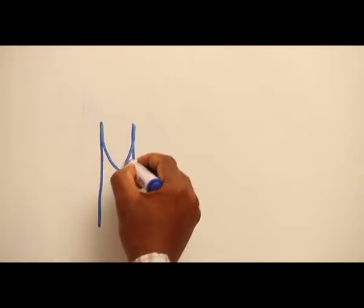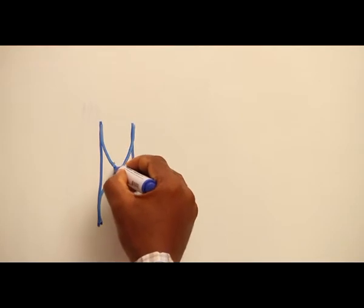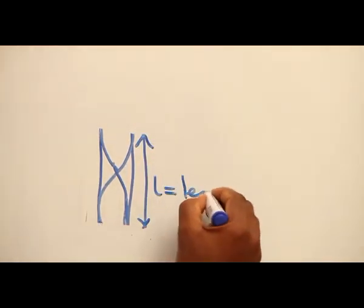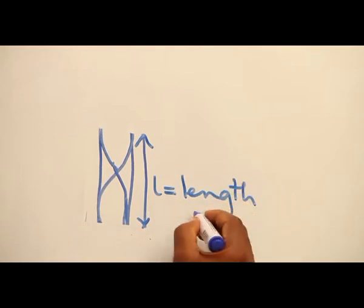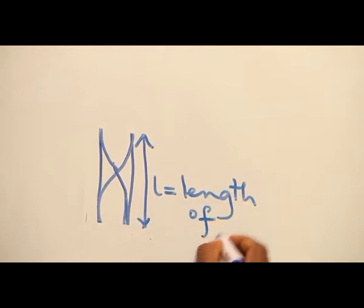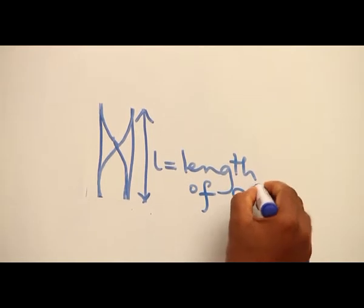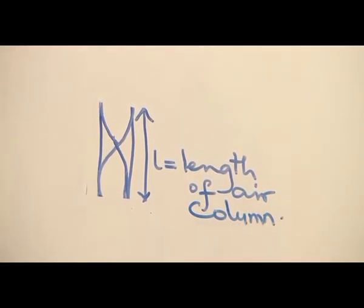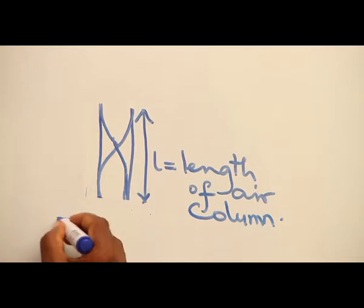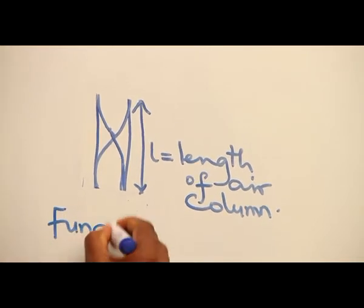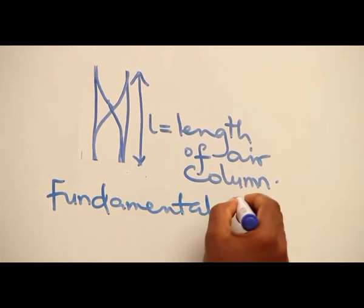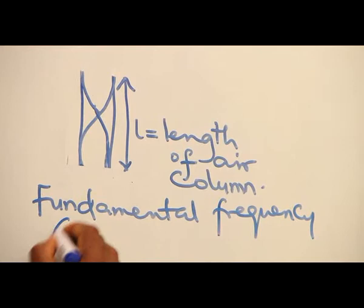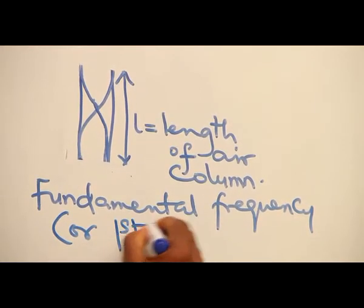We have the resonance tube with both ends open. Both ends are positions of antinode. Length of a column. This is for the fundamental frequency, or the first harmonic.